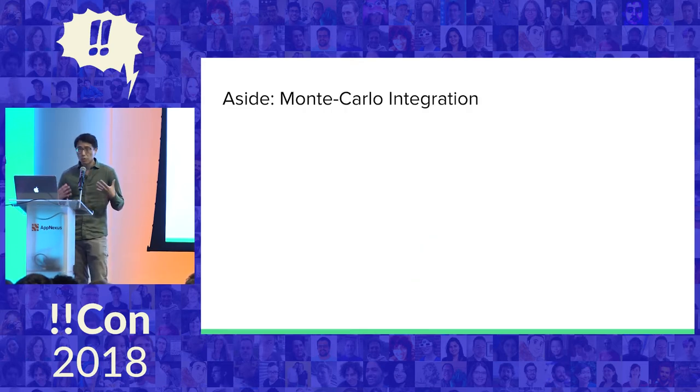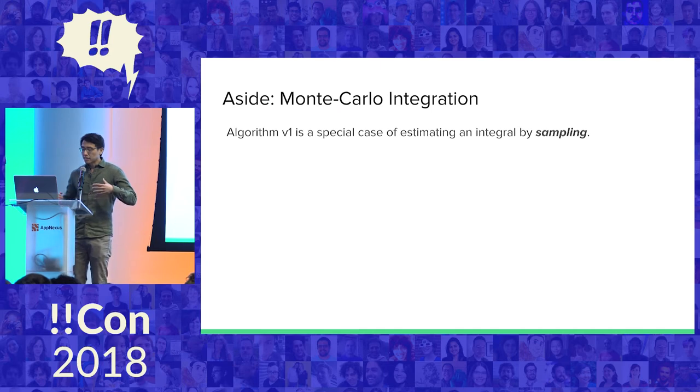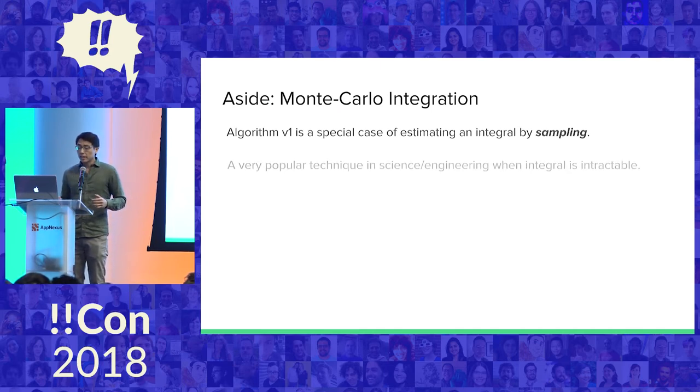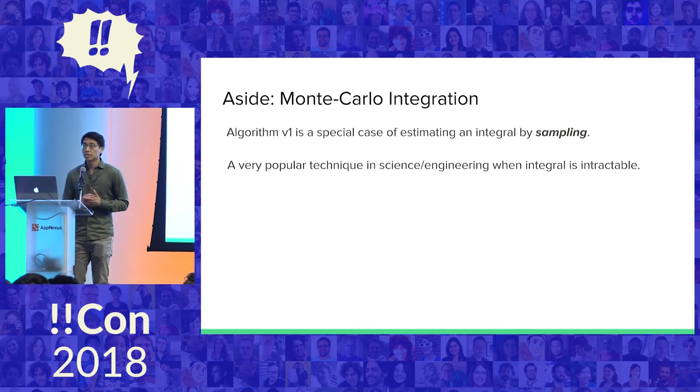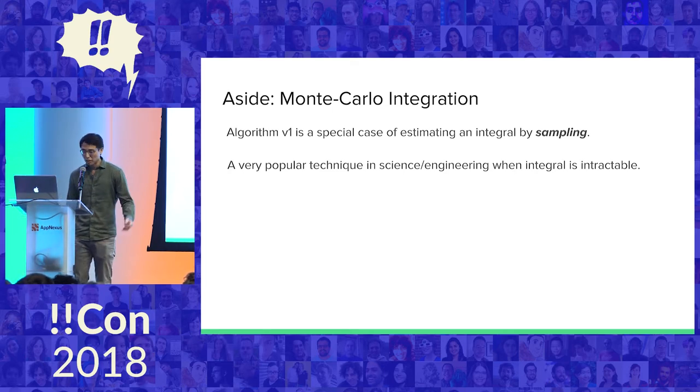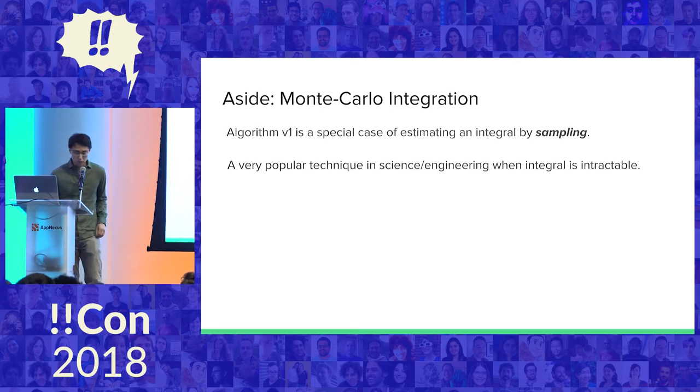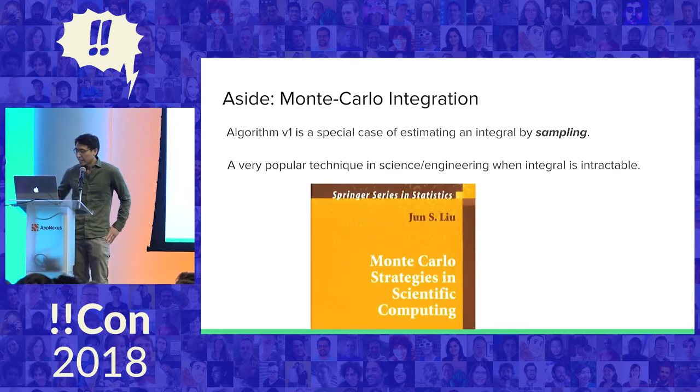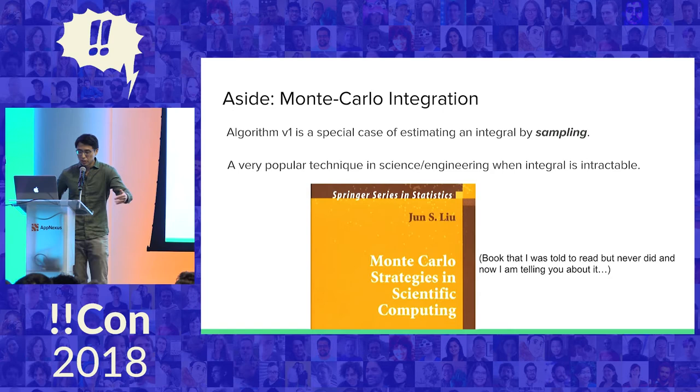Before we think of how much we need to run this algorithm to get a good estimate, I want to make a quick aside that this phenomenon of throwing things at the dartboard can be more generally thought of as Monte Carlo integration. This is the idea of trying to estimate an integral by sampling. It's a very popular technique in science and engineering when you have some integral expression that's too difficult to plug into Mathematica, or you don't remember your freshman calculus course or maybe never took one. Here's a book about it that I was told to read and never did, so it must be really important.